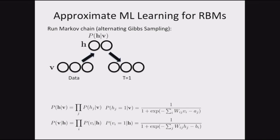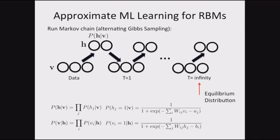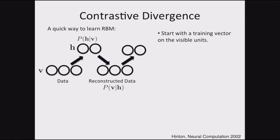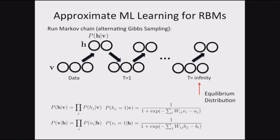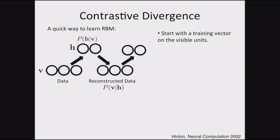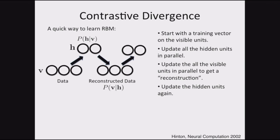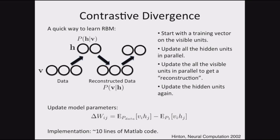There's a very clever contrastive divergence algorithm developed by Hinton in 2002. Instead of running the chain to infinity, run it for one step. Start with a training vector, update the hidden units, update all the visible units — that's your reconstruction, much like an autoencoder — update the hidden units again, then update the model parameters by looking at the statistics between the data and the model. Implementation is basically 10 lines of MATLAB code, or probably two lines in TensorFlow.